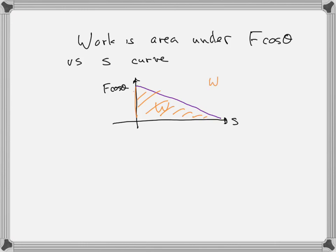Then we know that the work, in this case, whoops I had already written W, work is the area of that triangle. So it's going to be one half F cosine theta times S. So that would be the work.